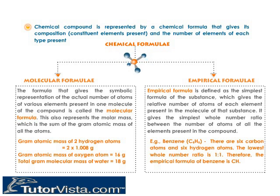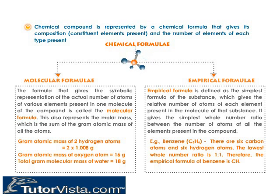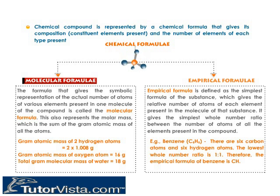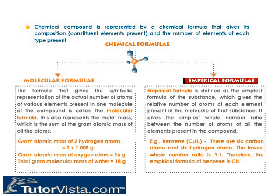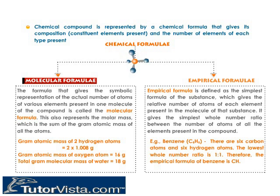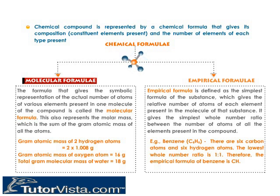Chemical formulae: A chemical compound is represented by a chemical formula that gives its composition — the constituent elements present and the number of each type. Chemical formulae are of two types: molecular formulae and empirical formulae. The molecular formula gives the symbolic representation of the actual number of atoms of various elements present in one molecule of the compound.